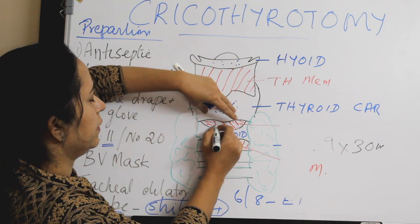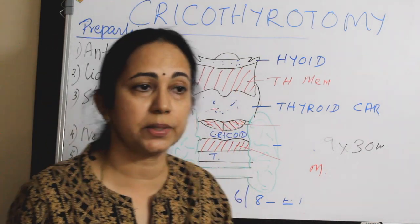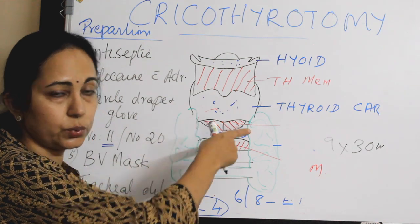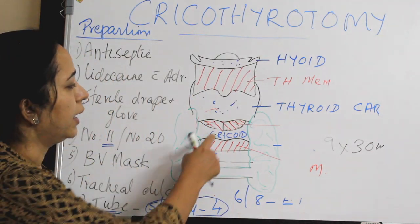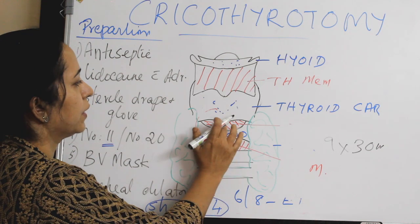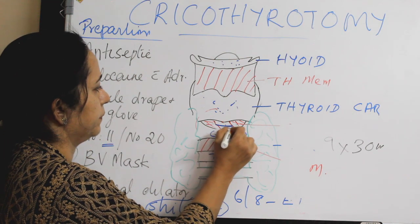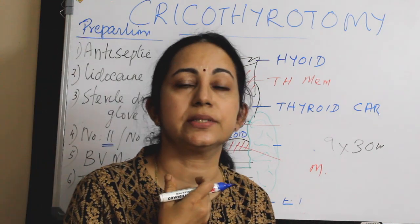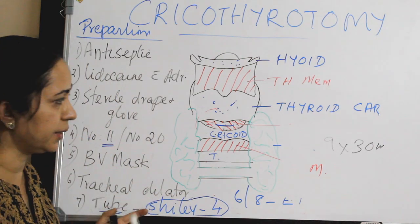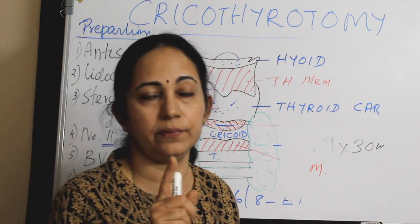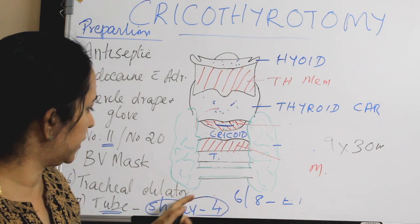Put a vertical incision over the skin. If you have instruments, dissect through; if not, go through the subcutaneous tissue with your fingers — ignore the bleeding, as heavy bleeding may occur. Once you reach the cricothyroid membrane, put a horizontal incision on it. The skin incision should be vertical and the incision over the cricothyroid membrane should be horizontal. If you have a tracheal dilator, use it; if not, use the index finger of your dominant hand to dissect through.